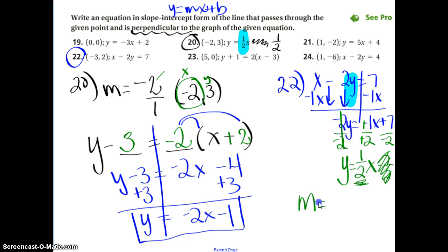So, perpendicular means I have to change the slope. I have to do something to it. Right now, it's positive. So, my perpendicular slope has to be negative. And then, I reciprocal it.